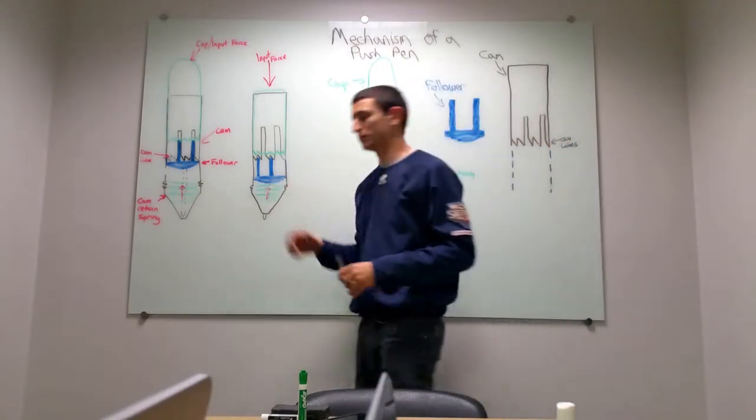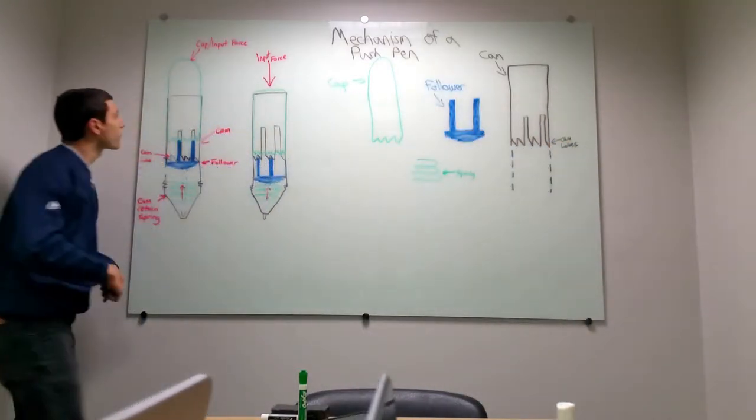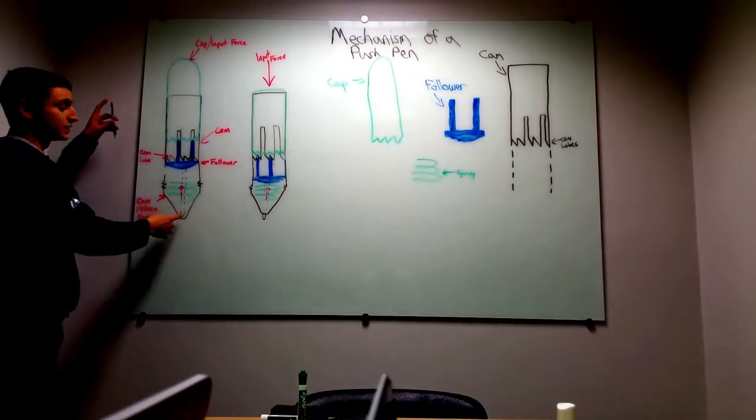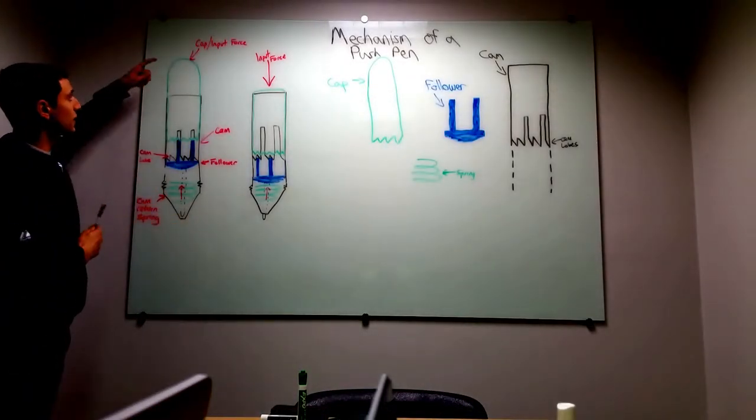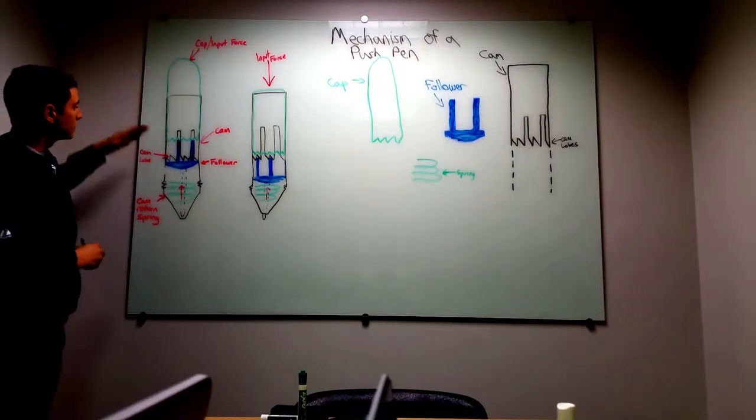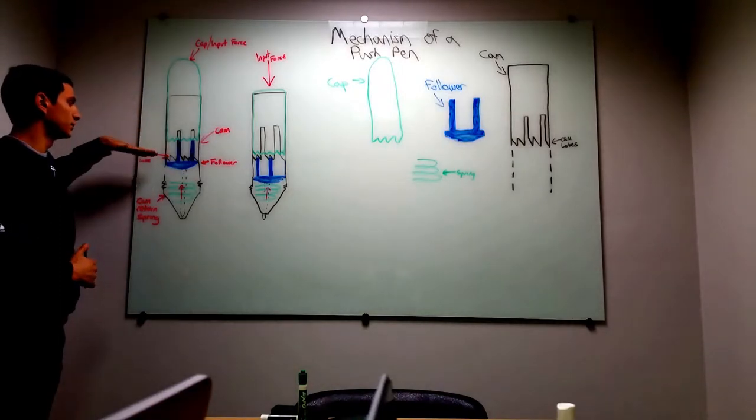Let's look at this all put together in one piece. This is when the pen tip is not exposed. So the pen cap is fully retracted and the follower is fully up in the position.